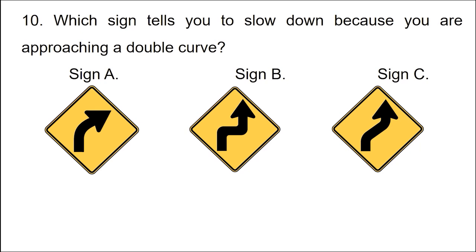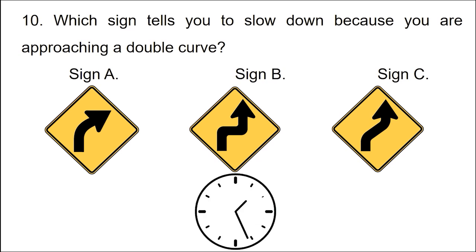Question: Which sign tells you to slow down because you are approaching a double curve? Option 1: Sign A. Option 2: Sign B. Option 3: Sign C.